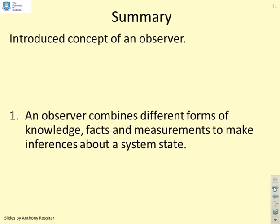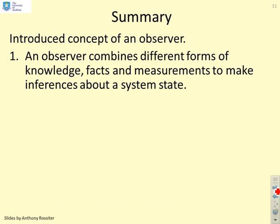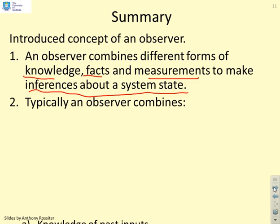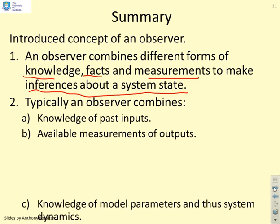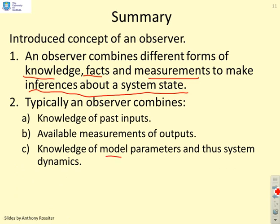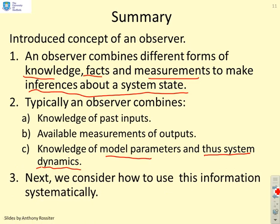So here's a summary. We've introduced the concept of an observer. An observer combines different forms of knowledge — facts and measurements — to make inferences about a system state. In a state-space model, an observer combines knowledge of past inputs, available measurements of outputs, and knowledge of model parameters, which implicitly means system dynamics. In the next video, we'll look at how to use this information to come up with a mathematical definition of an observer that gives us the system state estimates.